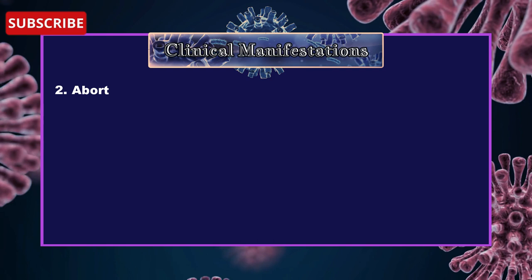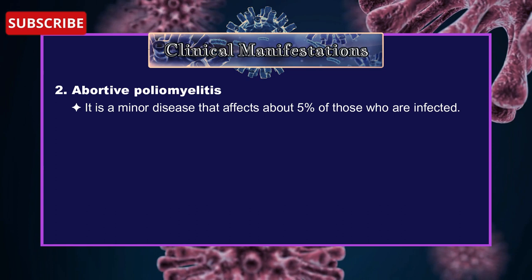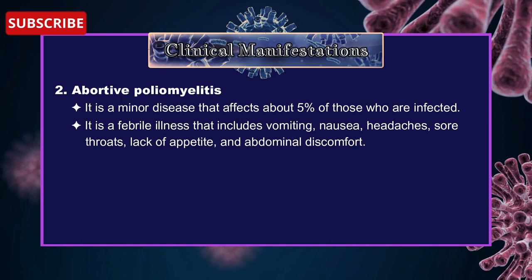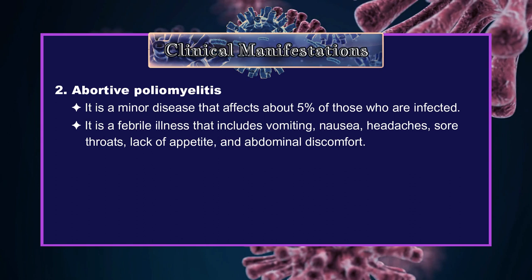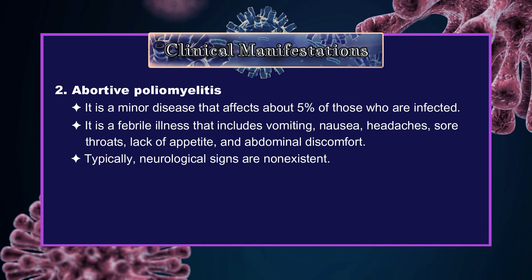2. Abortive poliomyelitis: It is a minor disease that affects about 5% of those who are infected. It is a febrile illness that includes vomiting, nausea, headaches, sore throat, lack of appetite, and abdominal discomfort. Typically, neurological signs are non-existent.